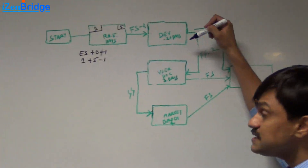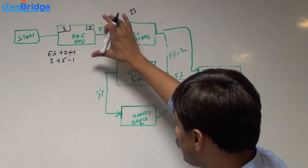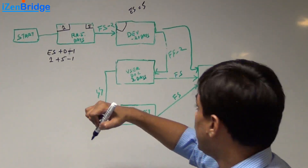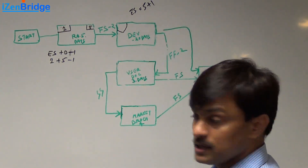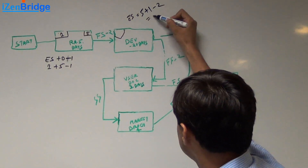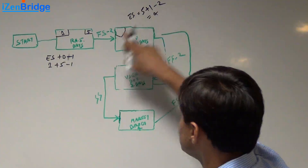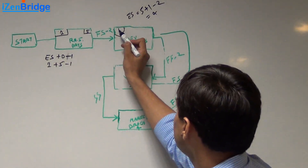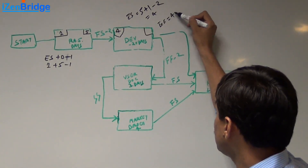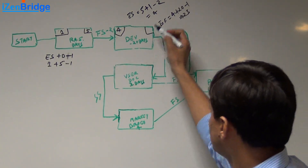Since we are following the FS relationship, the early start of development is based on the maximum of its predecessors. Here there is only one predecessor, so it's day 5 plus 1 for the next day. Since there is a lead of 2 days, we subtract 2, giving an early start of day 4. Development takes 20 days, so the early finish is 4 plus 20 minus 1, which equals 23.